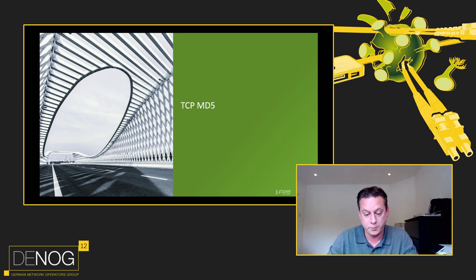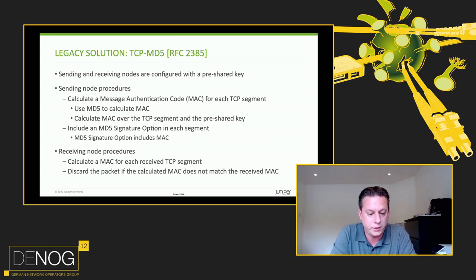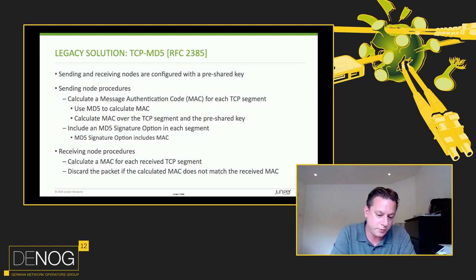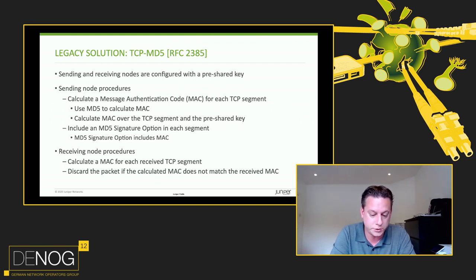So we have TCP MD5 to protect against that — that's what we are all using. Basically, you configure a pre-shared key on both sides. That pre-shared key is used to calculate the message authentication code for each TCP segment, using MD5 to hash it. You include the MD5 signature option in the segment you send. On the other side, they also calculate the MAC based on that pre-shared key. If the calculation doesn't match, you simply discard the packet. If it matches, you accept the TCP packet and process the payload.